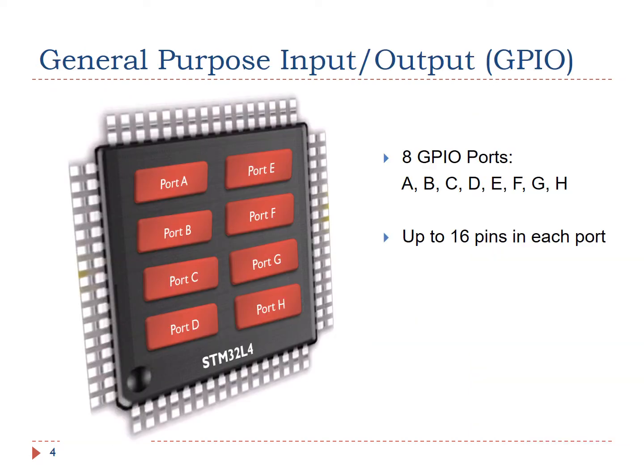Each STM32L4 chip has 8 GPIO ports, including port A, B, C, etc. Each GPIO port can have up to 16 pins. All pins in a GPIO port are controlled as a group. Each pin can be configured by software at runtime to perform various functions.